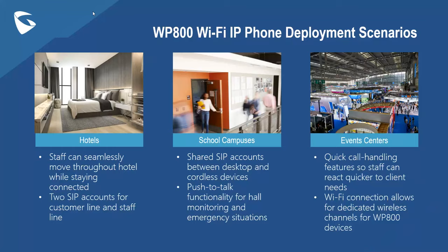Last but not least, event centers — which sometimes may also be connected to hotels in these deployments. With event centers, this offers quick call handling features so event staff can react quicker to any client needs and get connected with anyone across these much larger areas. A Wi-Fi connection allows for dedicated wireless channels for WP 800 devices. Basically, you can dedicate SSIDs with your access points to have dedicated bandwidth for the WP 800, so even if there are various individuals utilizing the Wi-Fi bandwidth within an event center or conference hall, you can always make sure you have the bandwidth you need.